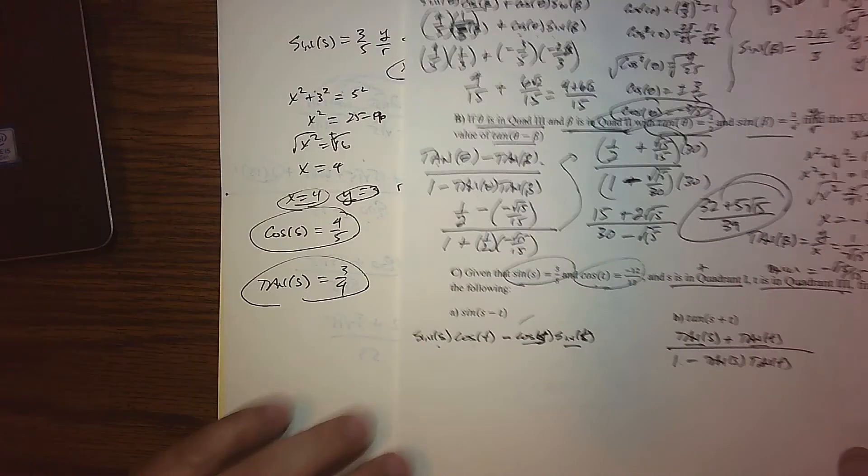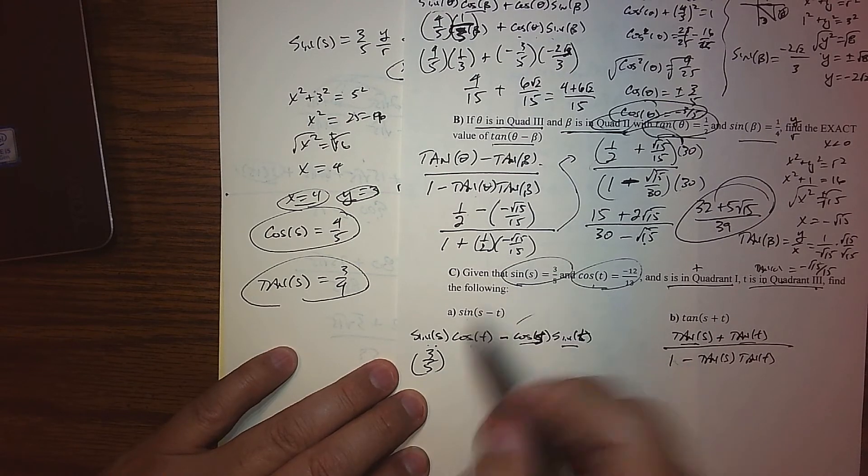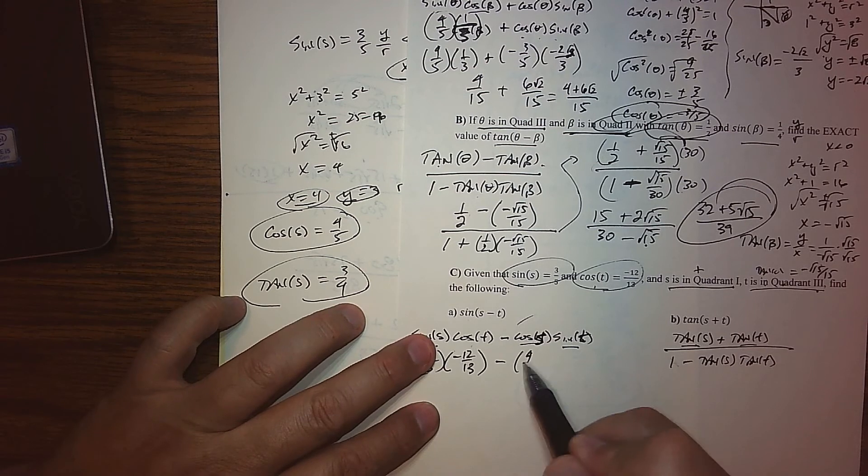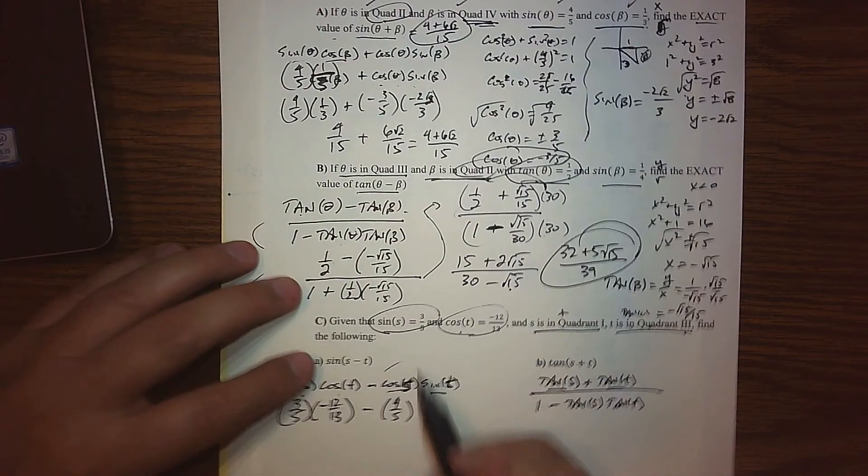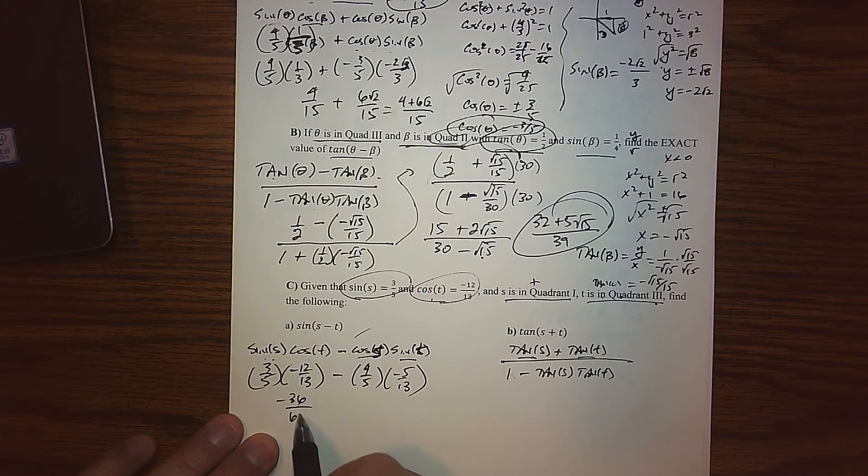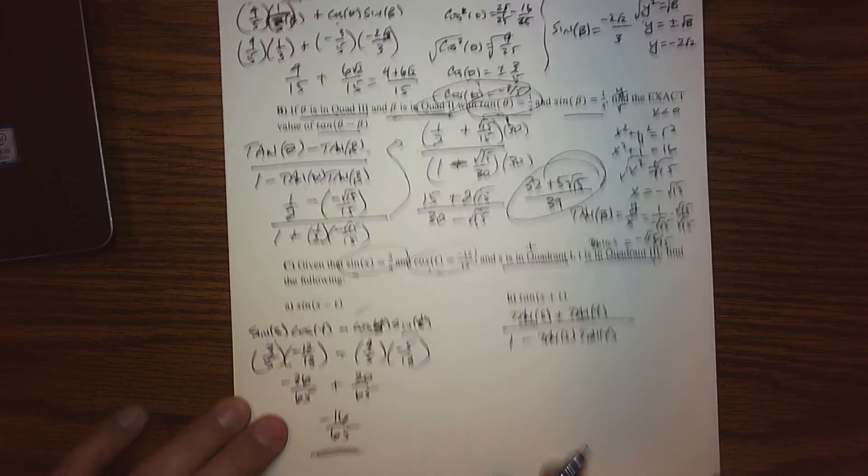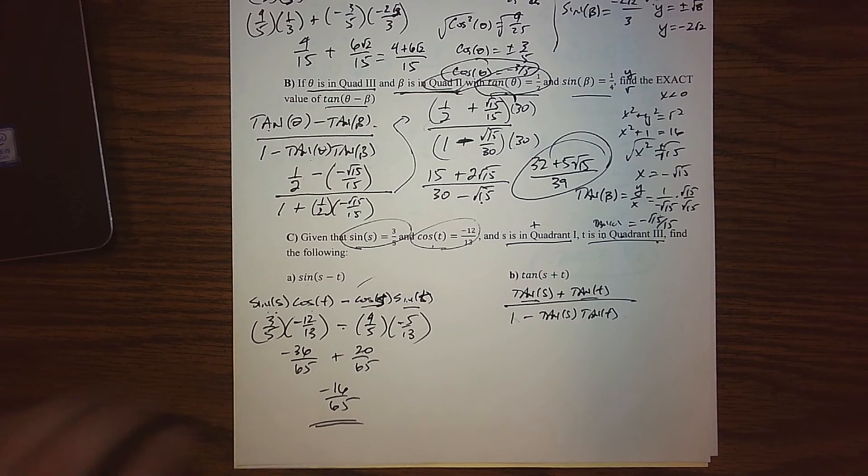All right, so here's what we know then. So if we put us all together to find the sine of s minus t, well, the sine of s was given, it's 3 fifths, the cosine of t was given, it's negative 12 over 13, the cosine of s, we found to be 4 fifths, and then the sine of t, we found to be negative 5 over 13. Okay, so subbing all that value in, we're off to the races. I believe over here, we get negative 36 over 65. We have a negative and a negative, so that's plus 20 over 65. And so putting this together, I believe we get negative 16 over 65 as our exact value. So the sine of s minus t would be negative 16 over 65 for the information that is given.